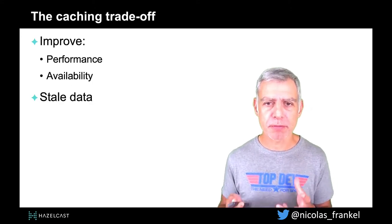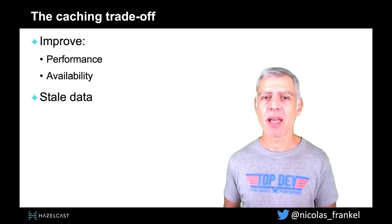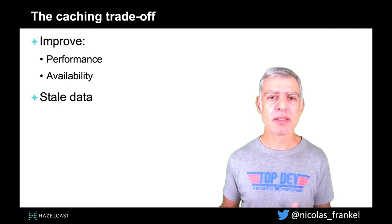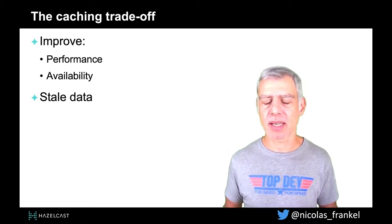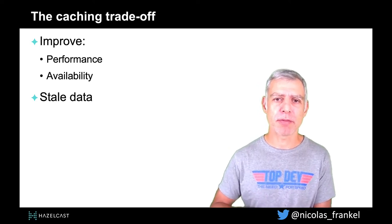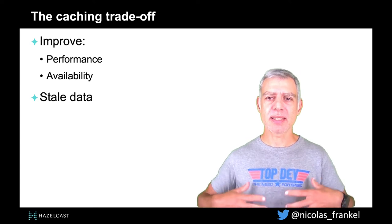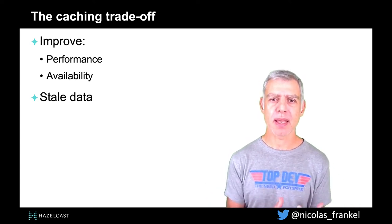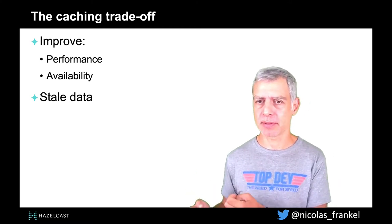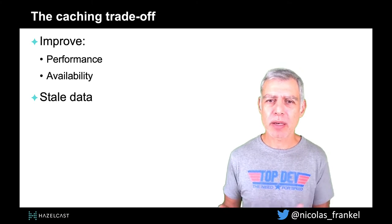If you remember one thing from this talk, it's that caching is a trade-off. You might have heard that caching is a sign of a badly designed system — it's not always the case. In general, it's not the case. There are a lot of valid reasons to have caching. This trade-off is: you accept to have stale data and in return you get fast data or available data. Fast data is pretty straightforward — but why available data?